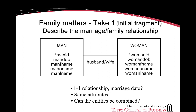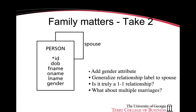Suppose we were to add marriage data to this data model — where would we add this attribute? Would we place it in both entities, causing replication of data? If we look at the entities, they seem to have the same information about two different people, so we should ask if the entities can be combined. In fact, they can be combined. After combining the entities, we have a singular person entity with a recursive one-to-one relationship.